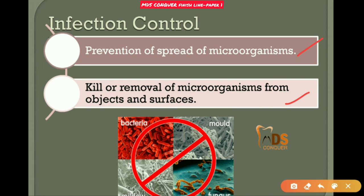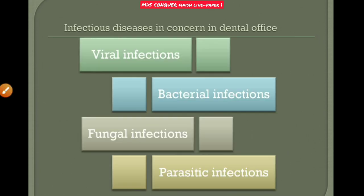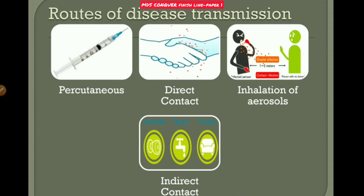Infections in dental offices may be viral, bacterial, fungal, or parasitic. Routes of disease transmission are very important things to include at the start of your infection control answer. Routes of transmission may be percutaneous, direct contact, inhalation, or indirect contact.